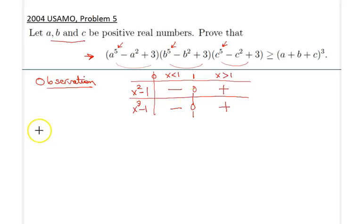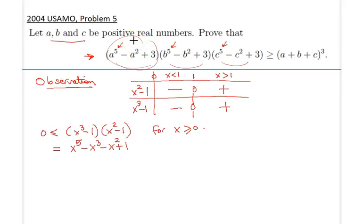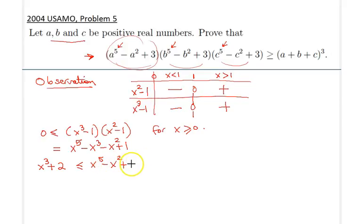What this really suggests is that the product (x³-1)(x²-1) is always greater than or equal to zero for x greater than or equal to zero. We can expand and distribute these terms, and then move x³ to the left hand side and add two to both sides. What we get as a result is: x³+2 ≤ x⁵-x²+3.